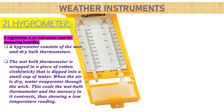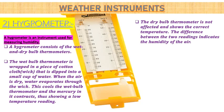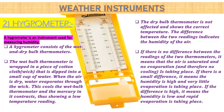When the air is dry, water evaporates through the wick. This cools the wet bulb thermometer and the mercury in it contracts, showing a low temperature reading. The dry bulb thermometer is not affected and shows the correct temperature. The difference between the two readings indicates the humidity in the air. If there is no difference, the air is saturated and no evaporation is taking place. If there is a small difference, the humidity is high and very little evaporation is occurring. If the difference is large, the humidity is low and evaporation is rapid.